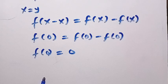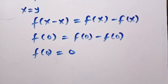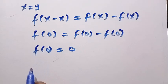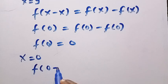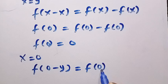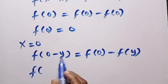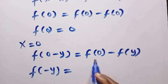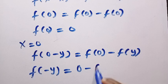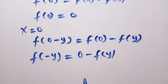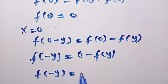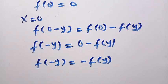Now let's test for oddness. If we test with x equals 0, we are going to have f of 0 minus y equals f of 0 minus f of y. Here, f of 0 minus y gives us f of minus y, and since f of 0 has been shown to be 0, this equals minus f of y. So f of minus y equals minus f of y.